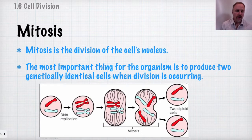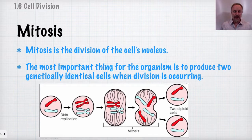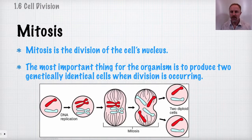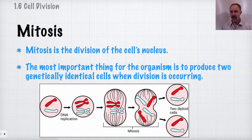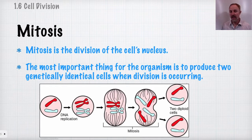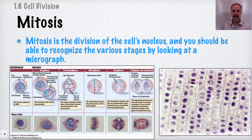The M phase is the division of the cell's nucleus. This is where the cell is actually dividing, and the most important outcome is to produce two genetically identical nuclei. Otherwise you'd have a mutation, which could lead to all sorts of problems. You want two genetically identical cells when all is said and done.